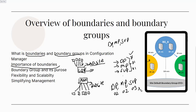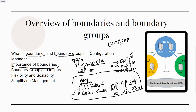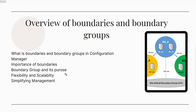The same scenario applies to Manchester. Whenever a Manchester machine requires applications to be downloaded, it goes to the Manchester distribution point, management point, or SUP to download updates — it will not go to London. Traffic flows internally within the local area network, resulting in fast communication and fast deployment. That is the purpose of defining boundaries within a boundary group.